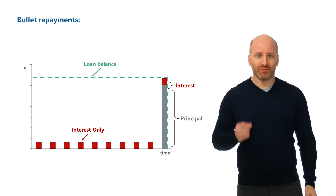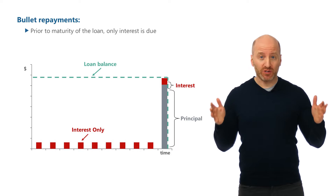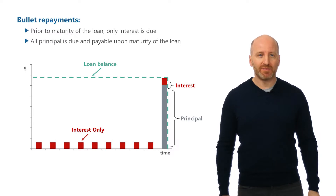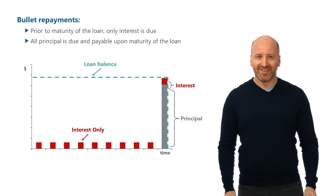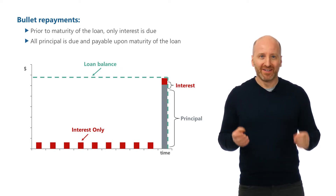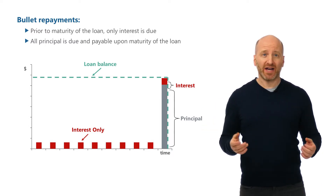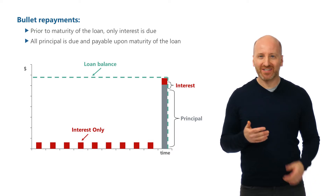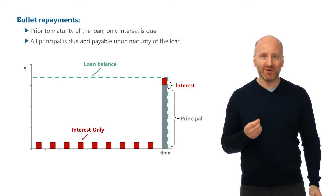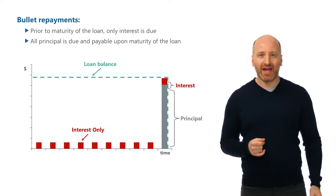Let's start with the bullet repayment structure. This is where the borrower only pays interest throughout the term of the loan, but there are no principal repayments until maturity, when the whole amount needs to be paid off at once. This isn't very common for project finance because it just wouldn't be workable. Project cash flows tend to be very stable over time because of all of those contracts, so it's hard to imagine a situation in which a typical project could ever generate enough cash flow in that final debt repayment period to pay off a large debt facility that hadn't been slowly amortized over time.